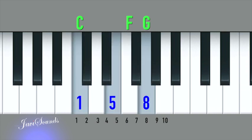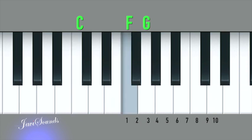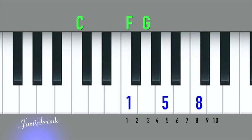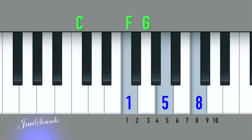When you reach point F, point F becomes number one. Then we look for five and eight: one, two, three, four — five is here — six, seven, eight. That is the major chord at the key of F. One, five, eight at F sounds like that — that's F major. It includes F, A, and C.